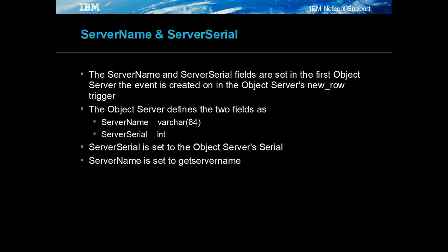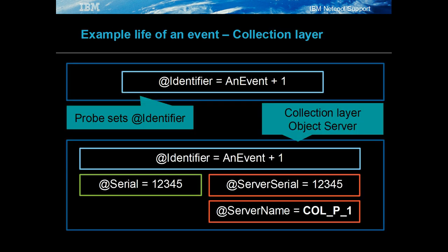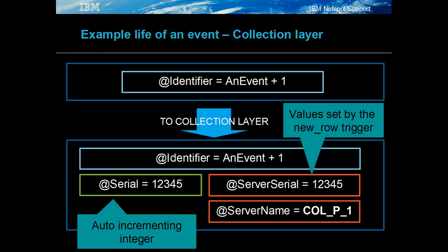In this example, the probe's rules file defines the problem event identifier as an event plus one. The identifier defines the event in the object server. When the event arrives at the object server for the first time, it is automatically assigned a serial value: one, two, three, four, or five.